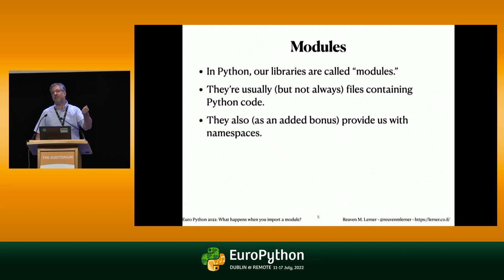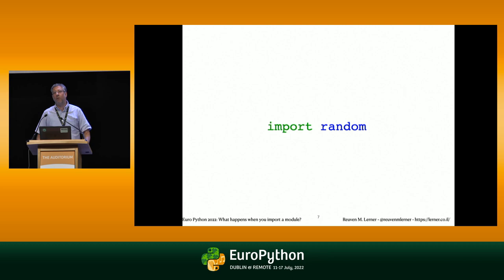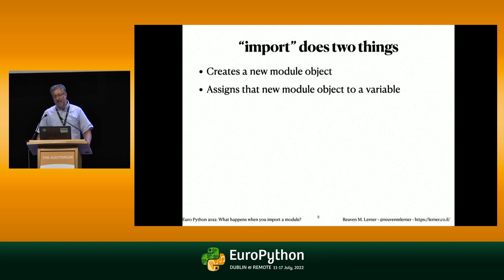The whole idea of namespaces is that if I'm working on something and you're working on something and we want to combine forces, we want to make sure that the variables I've defined and the variables you've defined don't clash with one another. So namespaces allow us to collaborate without worrying about namespace collision. Let's import a module — let's do 'import random'. People use import all the time, but what does import really do? It does two things. First, import creates a new module object. Everything in Python is an object, and here we're creating a module object. The second thing import does is assign that module object to a variable.